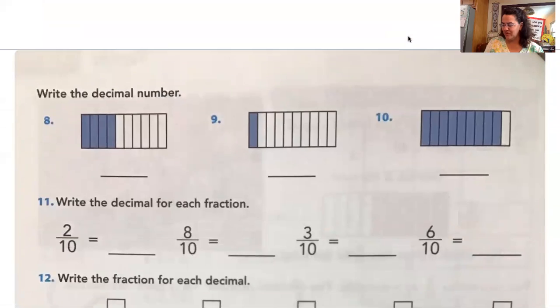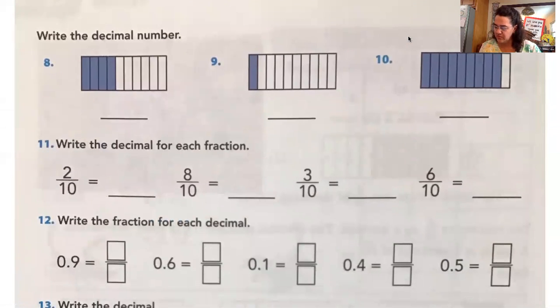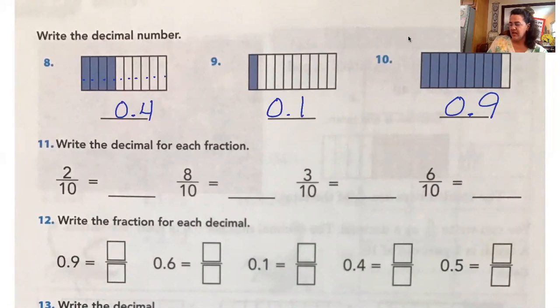Turn your paper over. You're going to write the decimal number. So one, two, three, four, five, six, seven, eight, nine, ten. How many are colored in? How do I write that decimal then please, Bradley? 0.4, four tenths. Good. Do the next one for me please, Jax. 0.1, one tenth. Good. And do the last one for me please, Trinity. 0.9. Awesome.